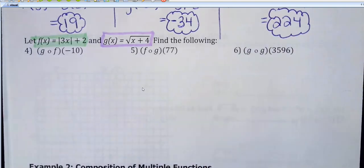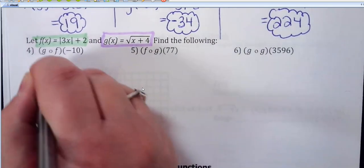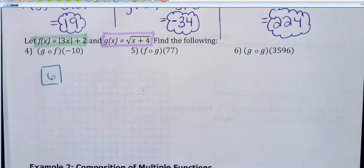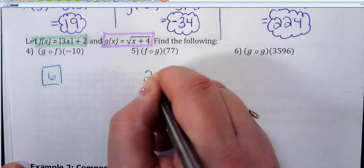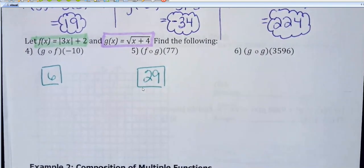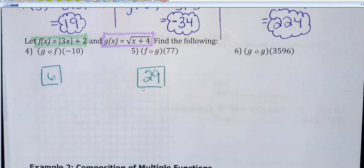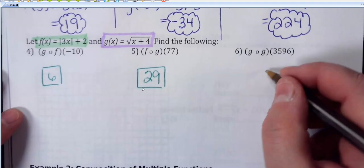Who can tell me — did anybody get number four? G of f of negative 10 — what did we get there? Should be 6. Anybody not get 6, let me go over it. What about f of g of 77? Should be 29 — anybody not get that one? And the last one: g composed with g of 3596. Should be 8.